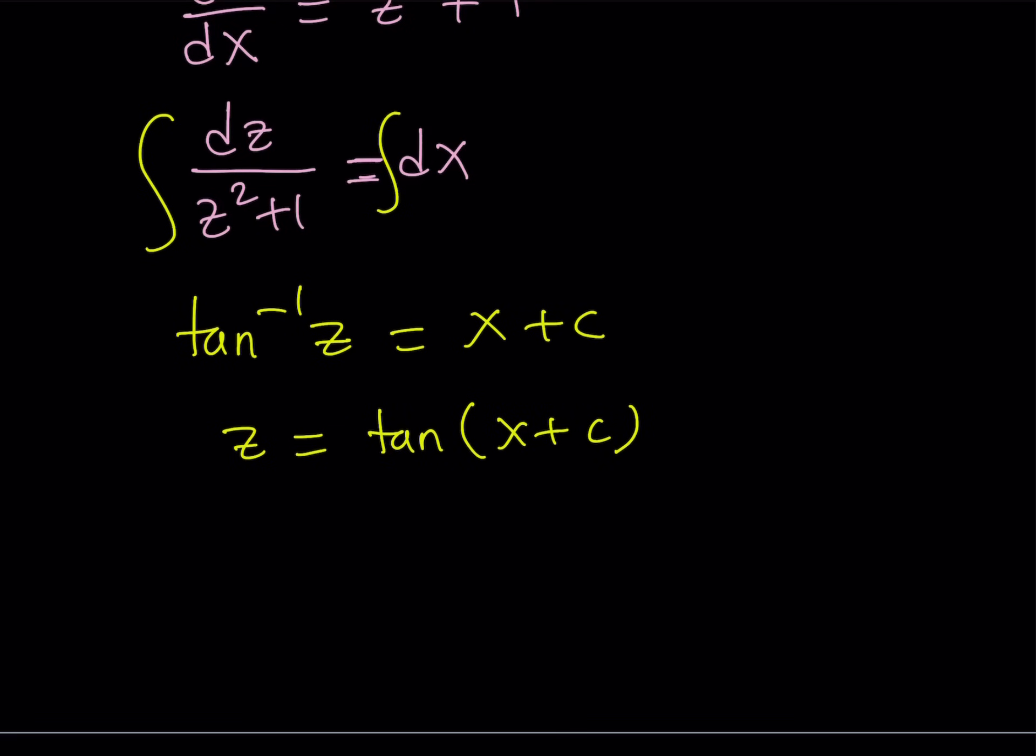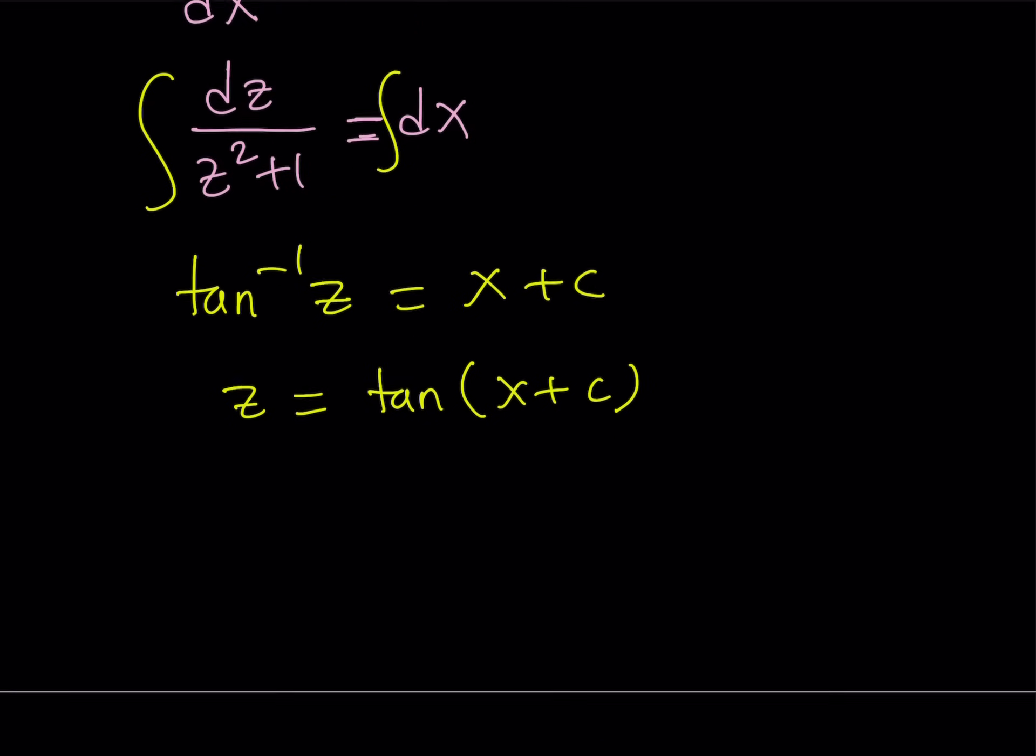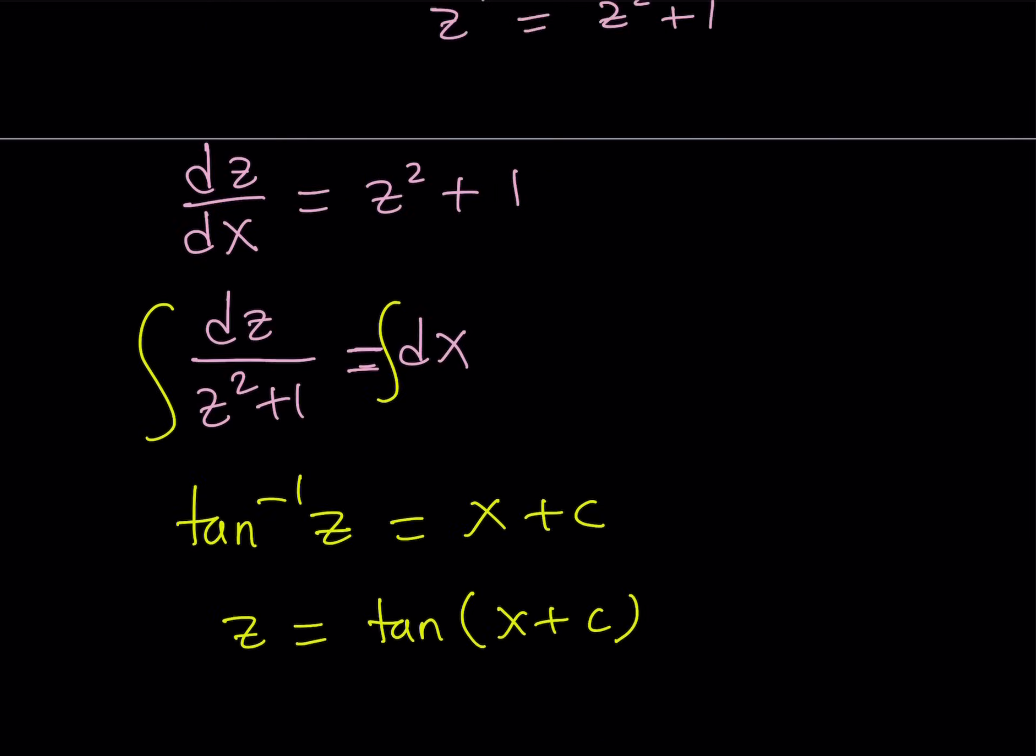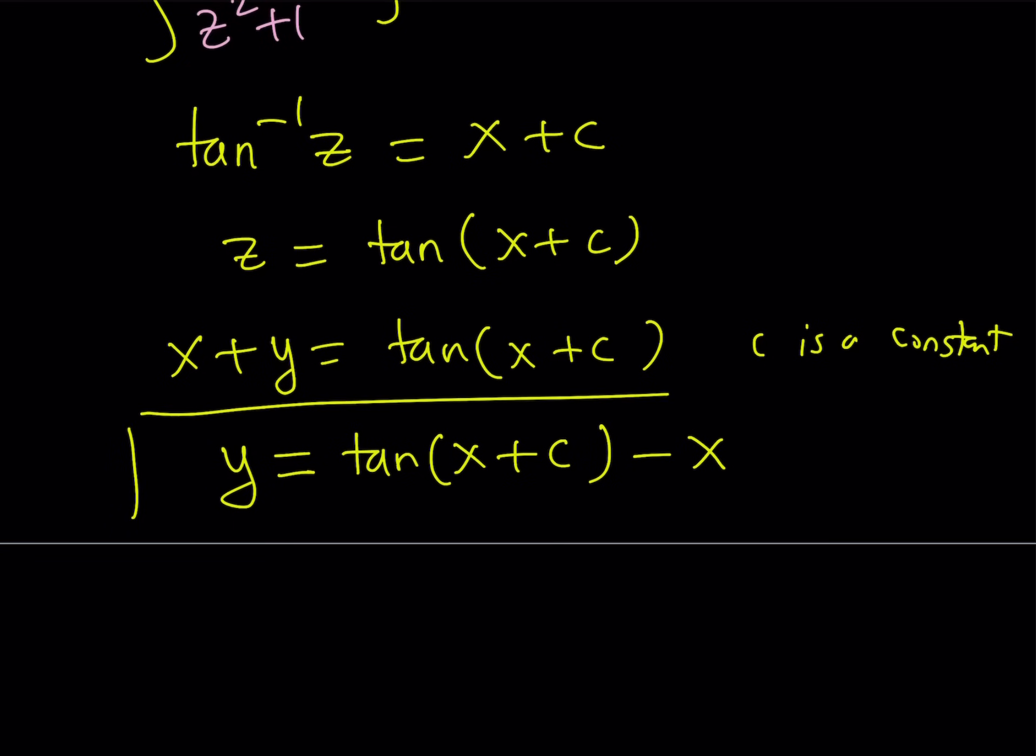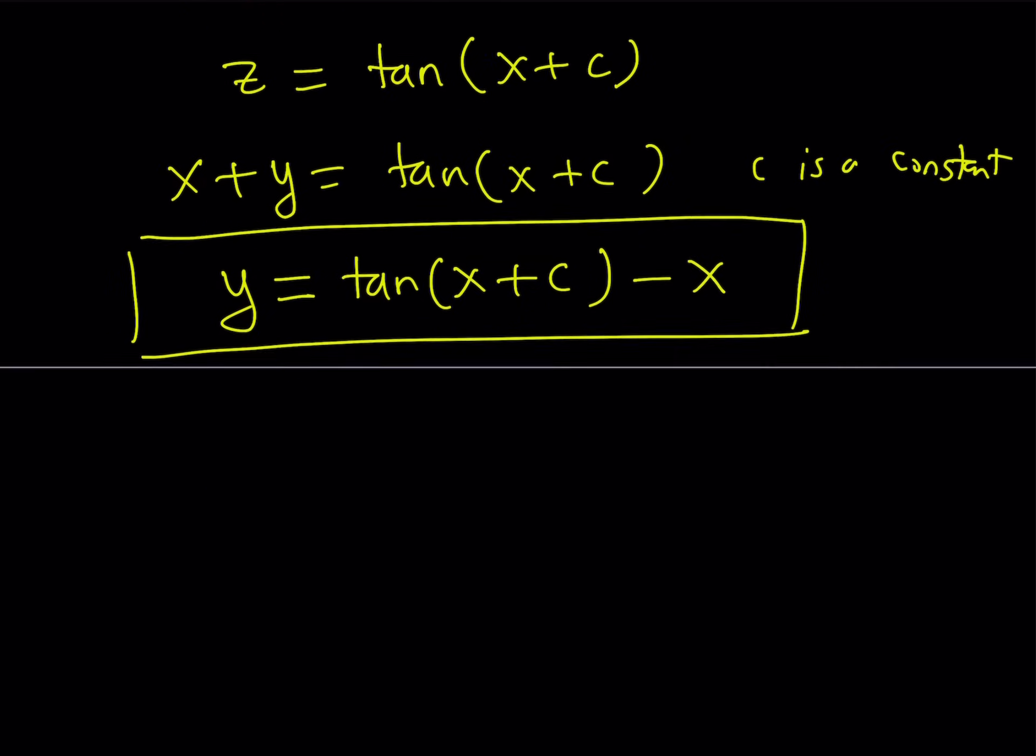Now, at this point, you might be thinking, oh, we're done because we solved for z, but z was the variable that we used, remember? So we have to turn this into x. But what is z? z is equal to x plus y. So let's go ahead and replace z with x plus y. That gives us x plus y is equal to tangent x plus c, where c is a constant. And here, our goal is to find y, solve for y. Y can be written as tangent x plus c minus x. And c is a constant, everything is taken care of, and this basically concludes the problem.